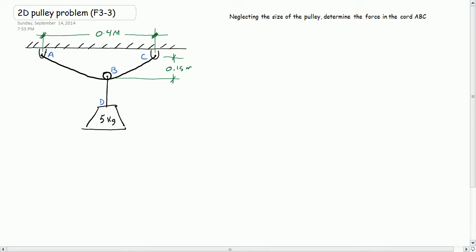Okay, so here's a common pulley problem here. It's a pretty standard 2D statics problem. We can use our concurrent force formulation of statics to solve it. And what we have is a 5 kg mass hanging from a chord that goes through A, B, and C.